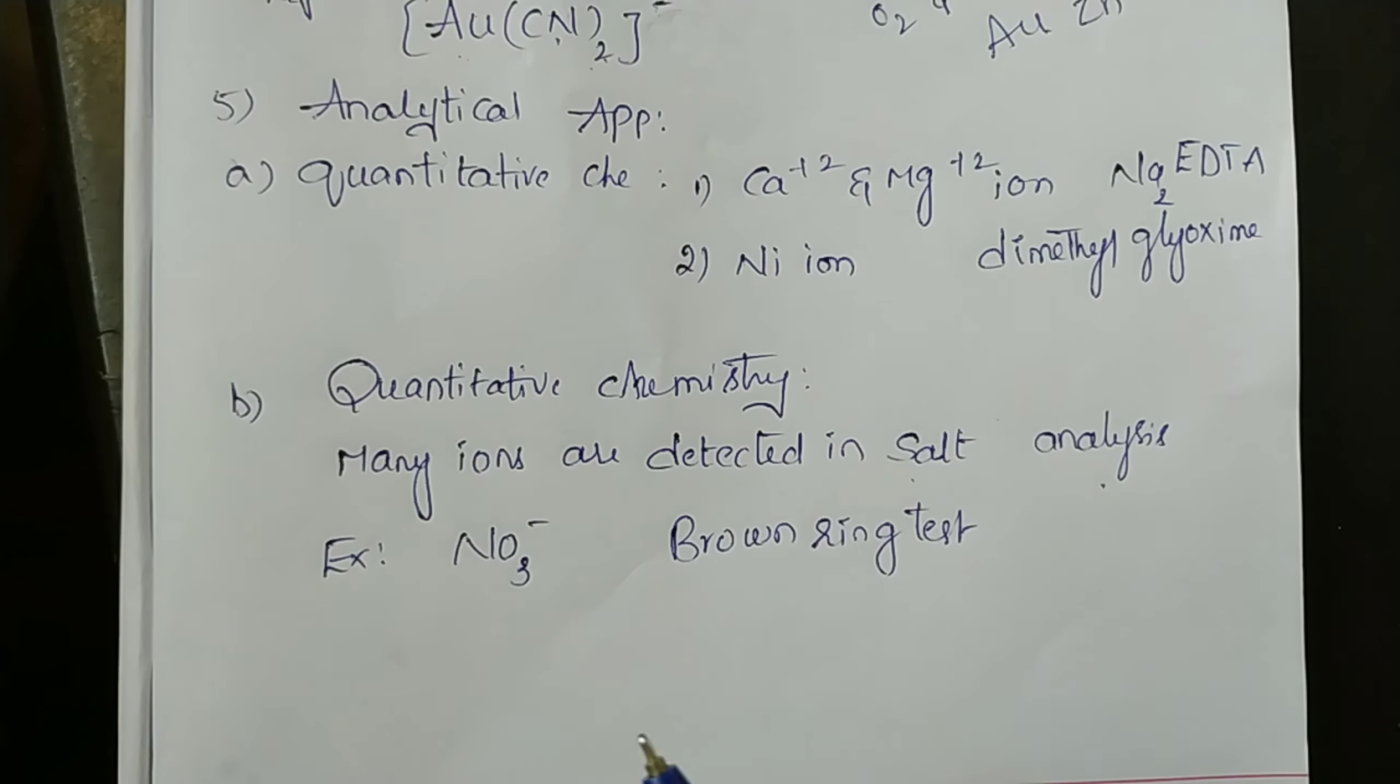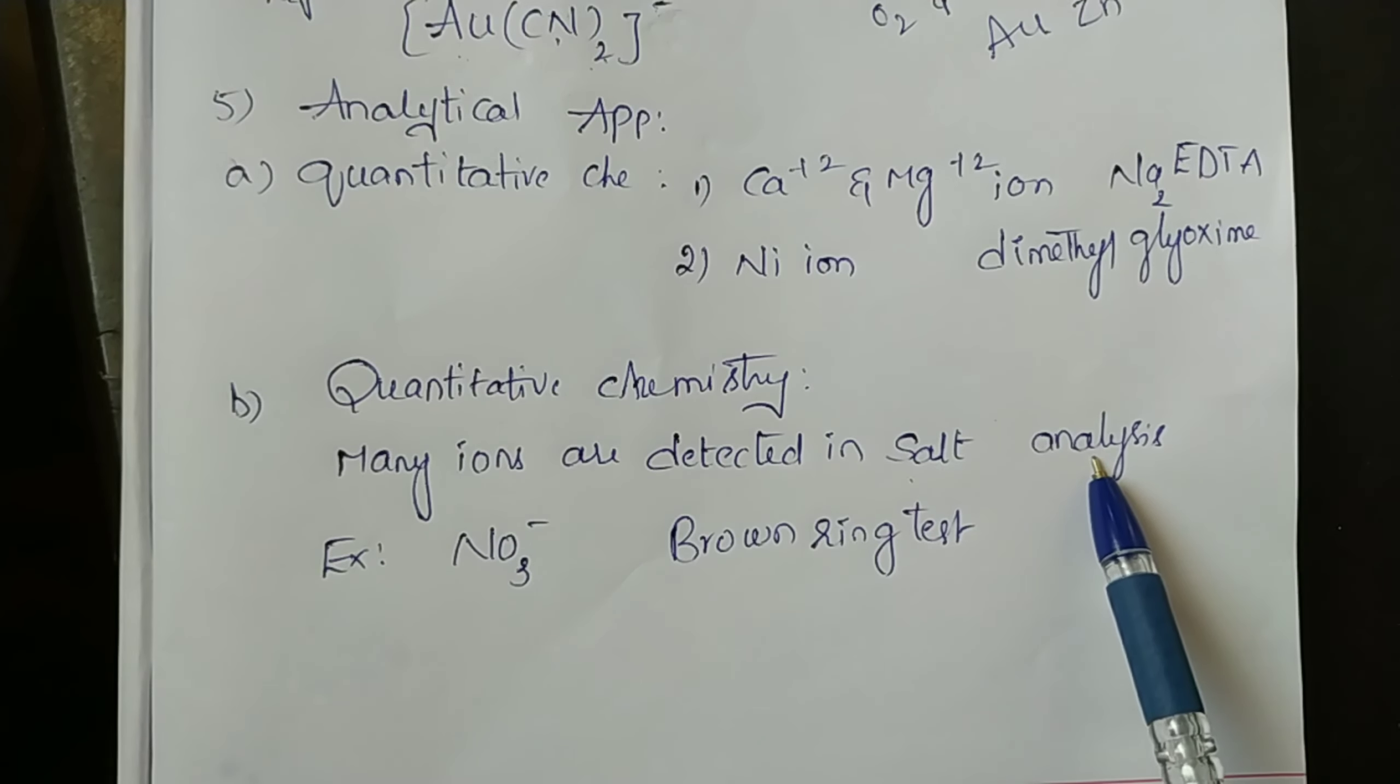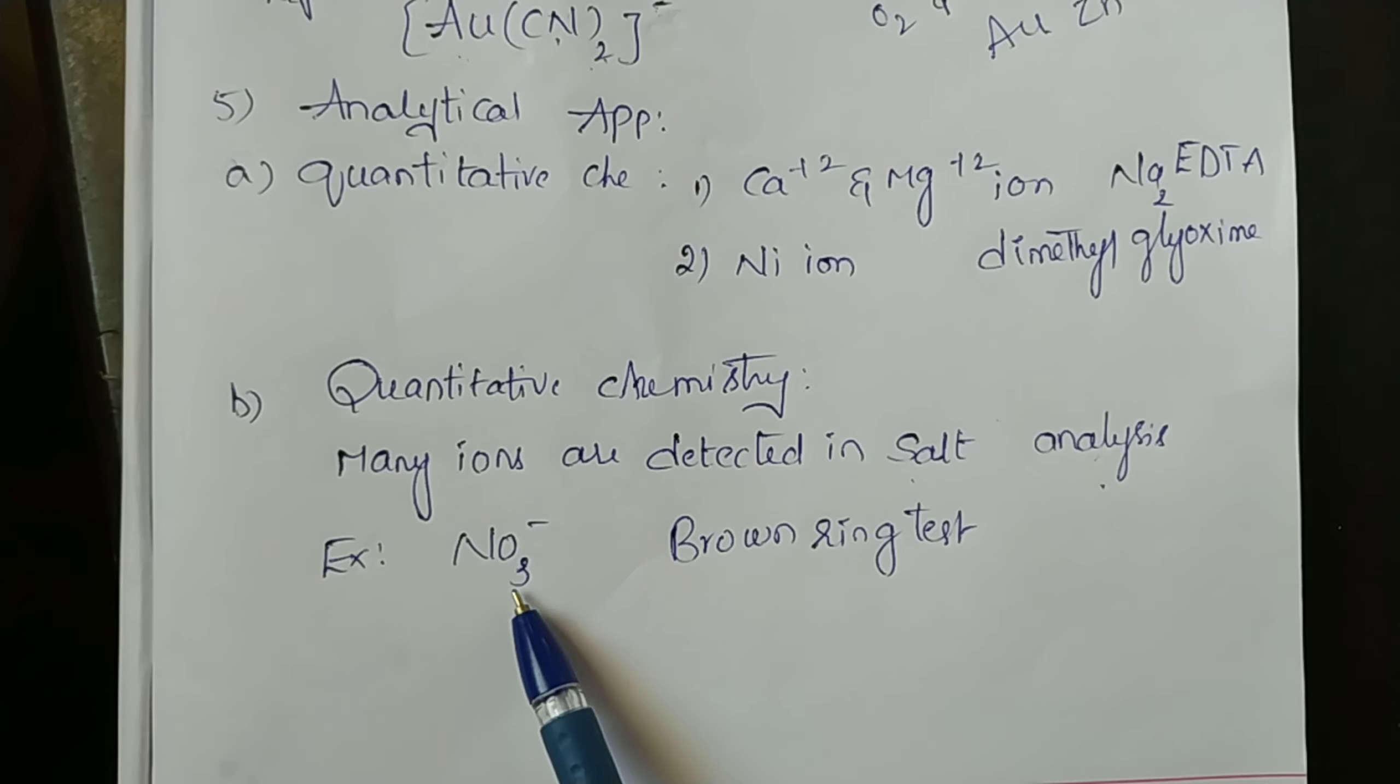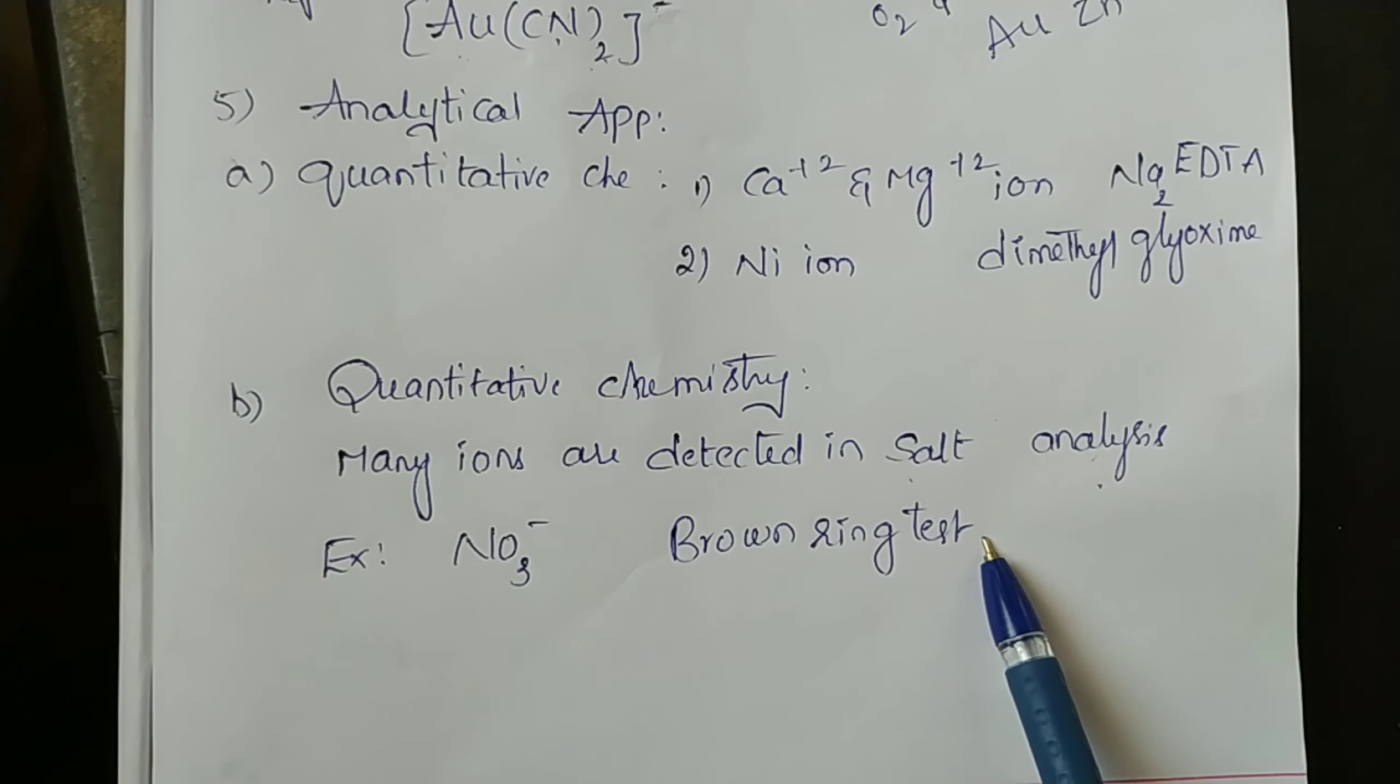In quantitative chemistry, many anions are detected in salt analysis due to complex formation. Example: NO3- is identified by brown ring test due to the formation of brown ring complex.